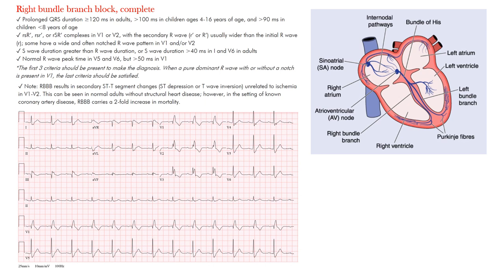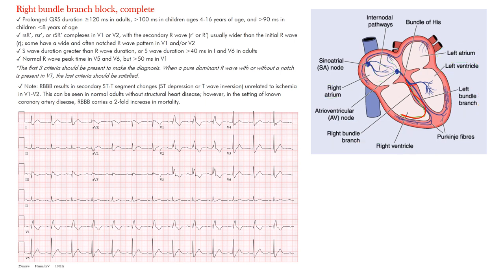Complete right bundle branch block is important to know — not only how to recognize it, but also to understand the pathophysiology. Let's review the conduction system. We have the sinus node, internodal or AV nodal pathways, the AV node, the His bundle, the right bundle branch, and the left bundle branch, which gives off both an anterior and posterior fascicle.